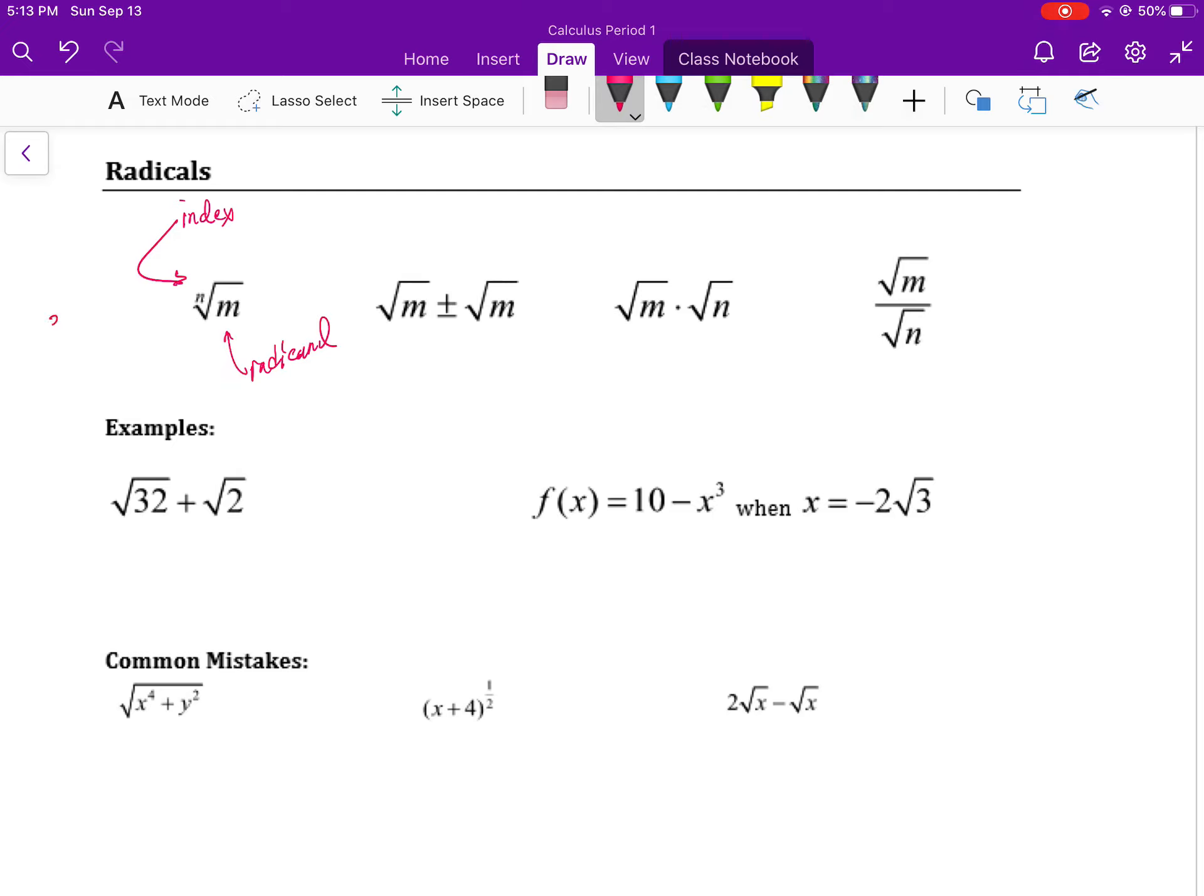An example would be the third root of 64, and the third root of 64 is equal to 4 because 4 times itself 3 times is equal to 64.